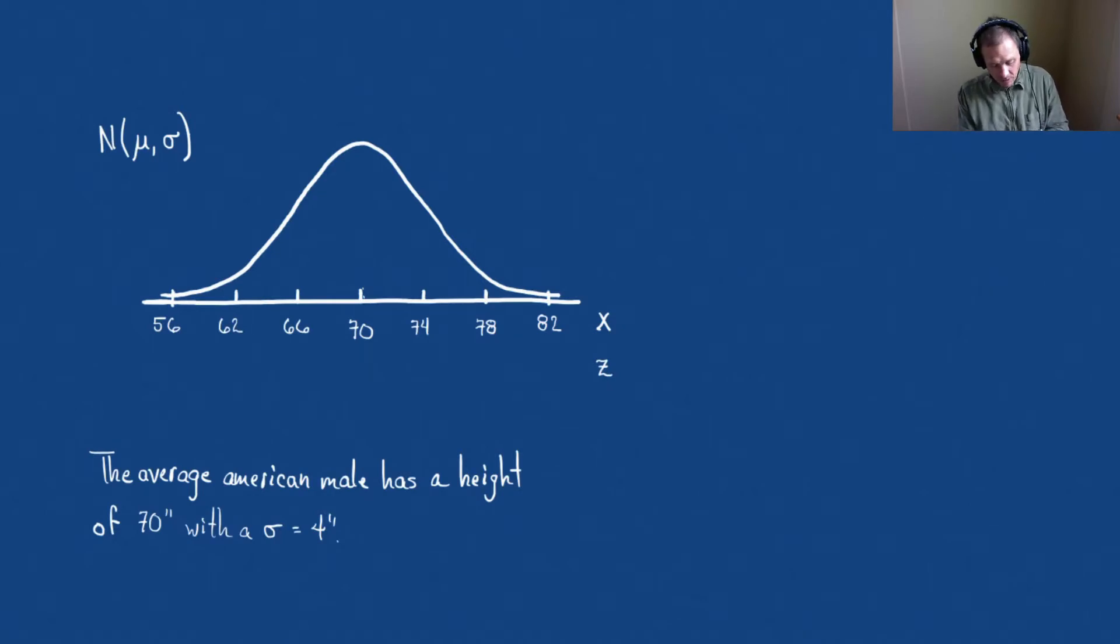Likewise, we know that 74 is in the first position, so that should have a standard deviation of 1. 78, that's two standard deviations, so it should have a z-score of 2. And 82, 3. And likewise in the other direction, that 66 would be one standard deviation below 70, so it would have a z-score of minus 1. 62 is two standard deviations below the mean, so that should have a z-score of minus 2. And 56 would be minus 3.